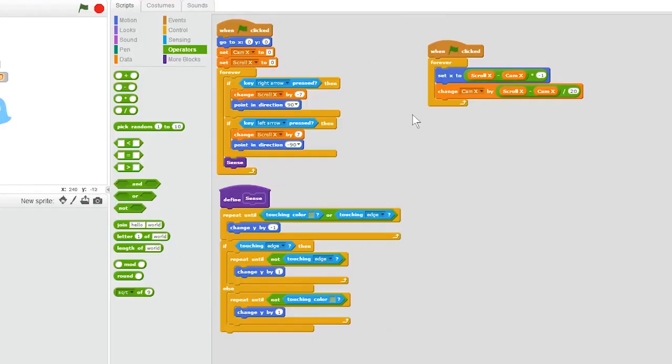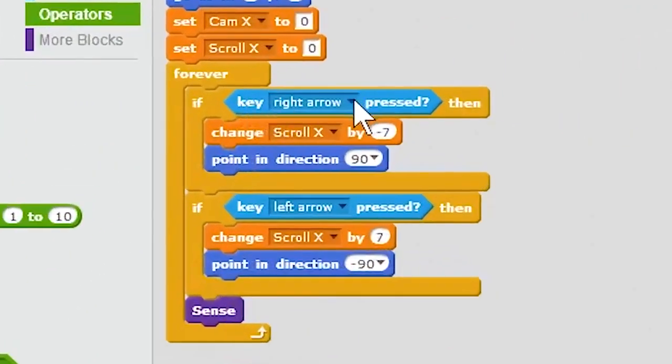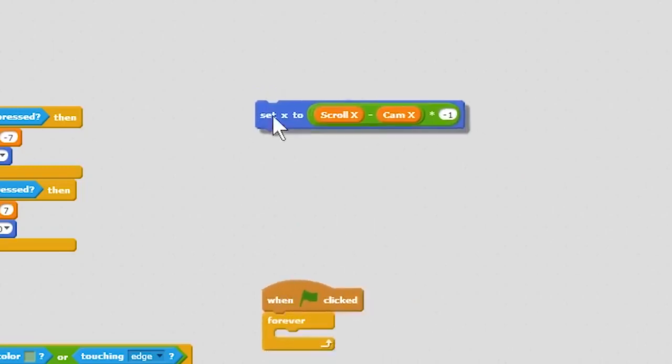Now my scripts are pretty simple. What I have is just the right arrow key pressed, point in direction 90, change scroll x by negative seven. Left arrow key is pressed, point in direction negative 90, change scroll x by seven. It is important to know they are reversed.